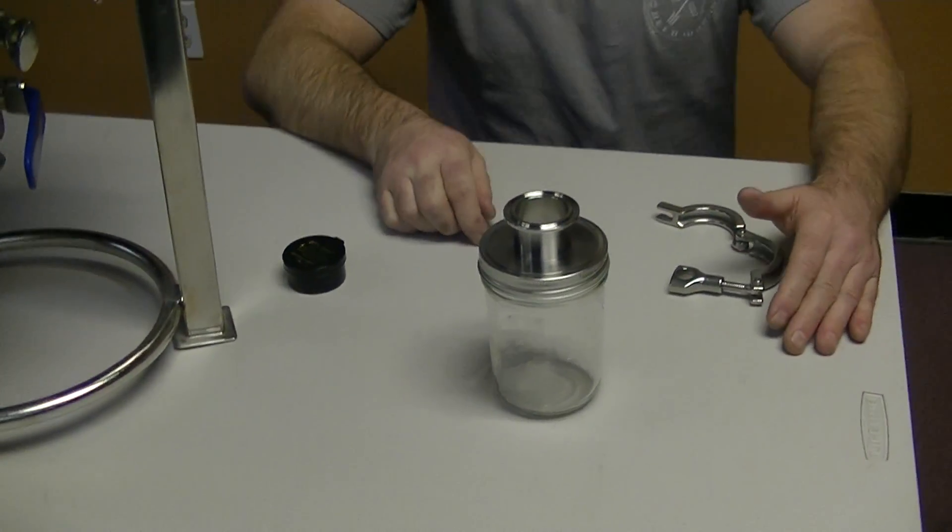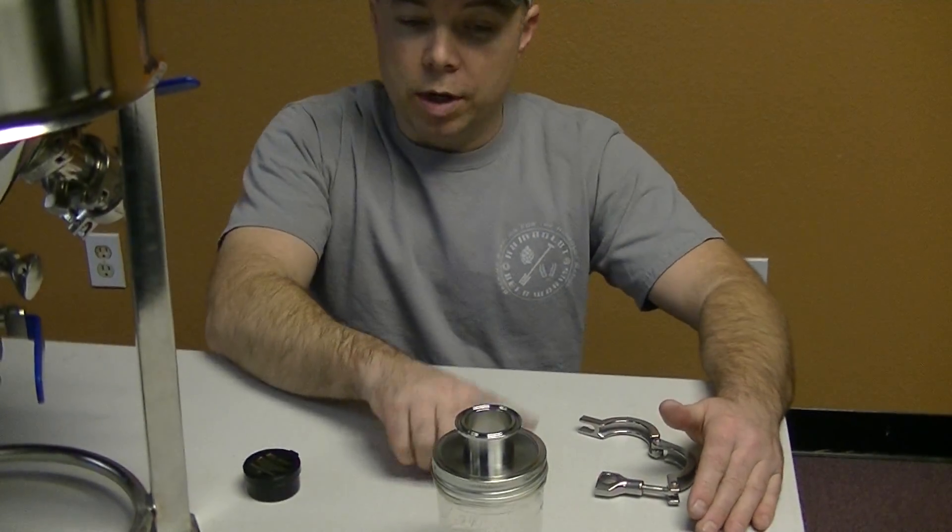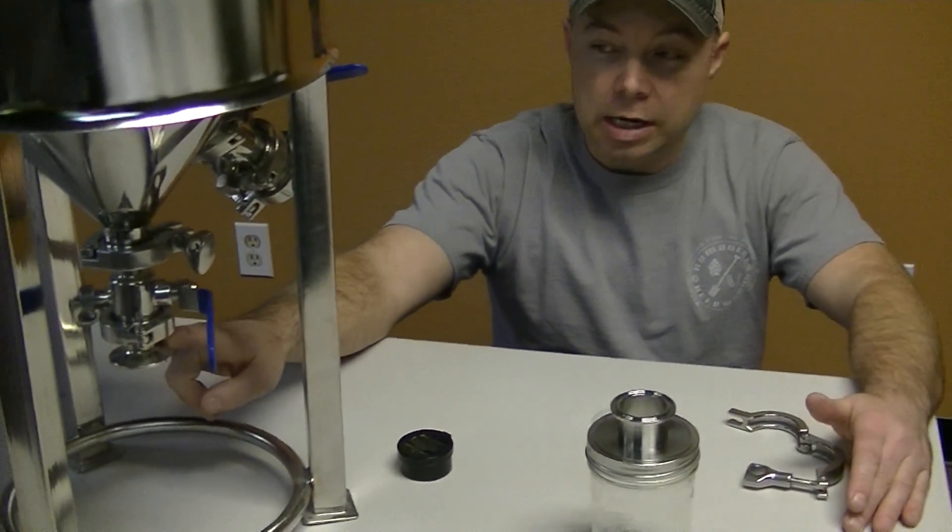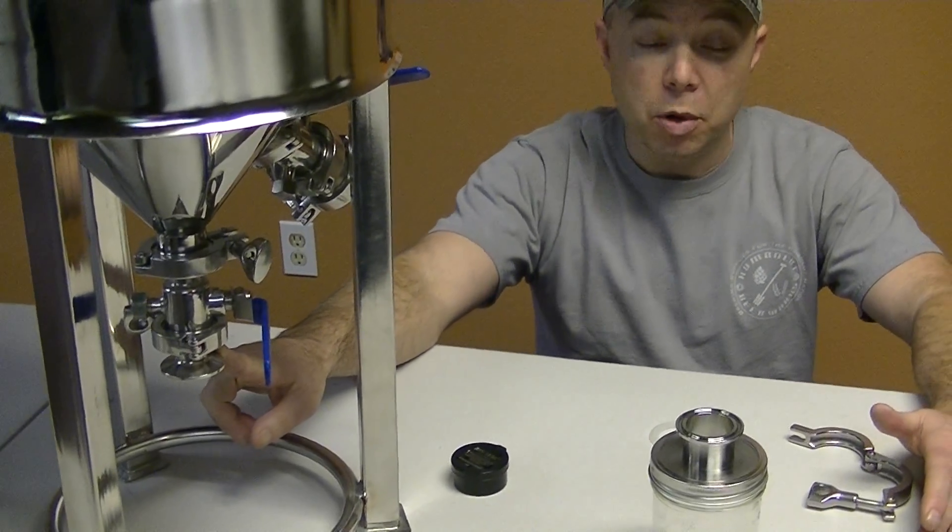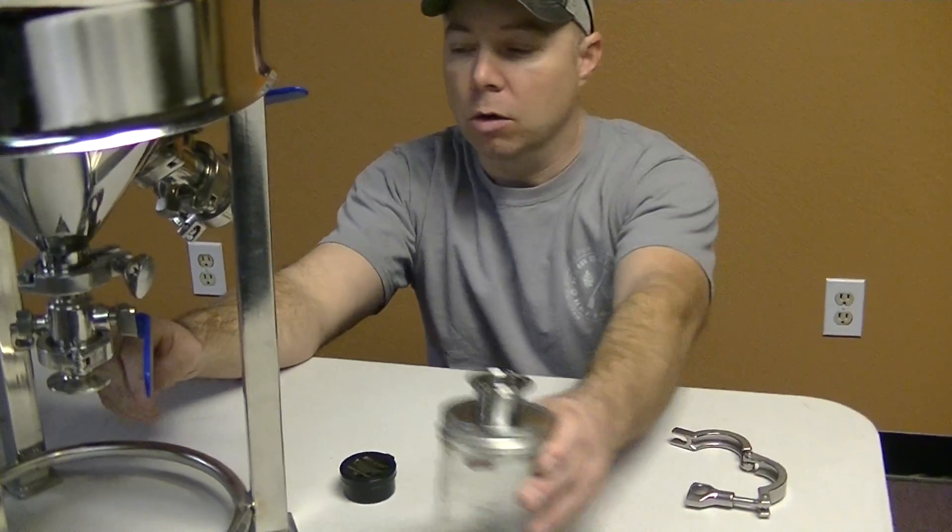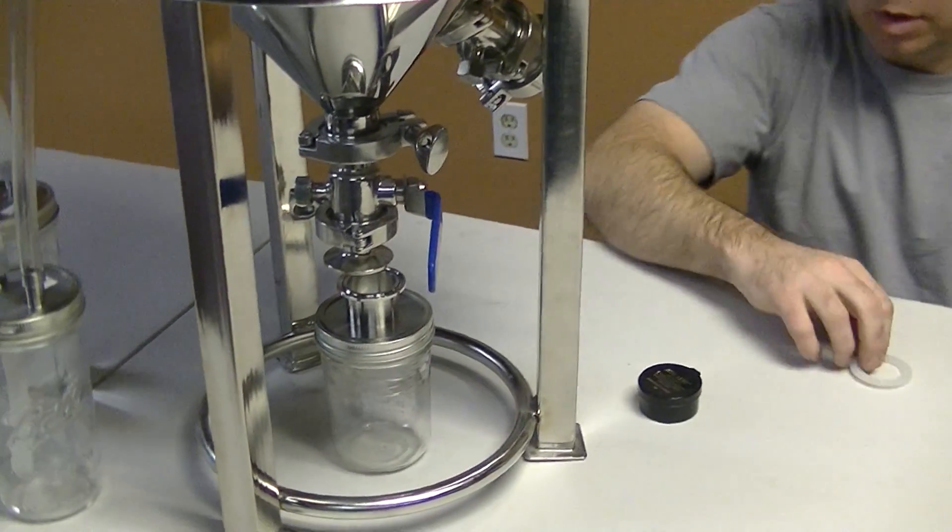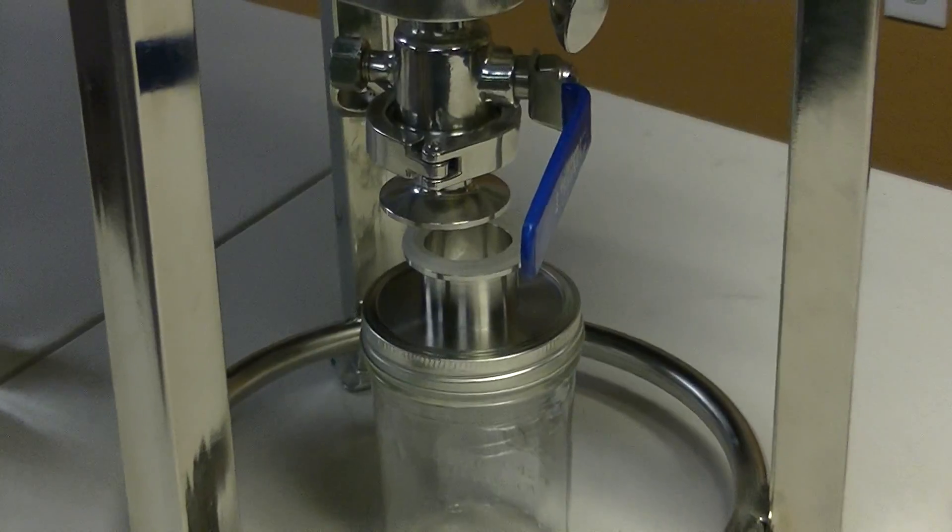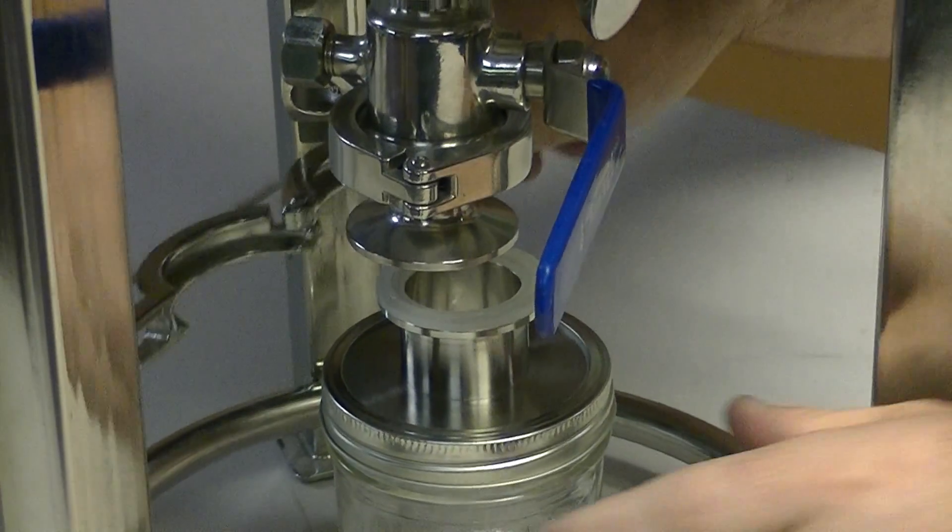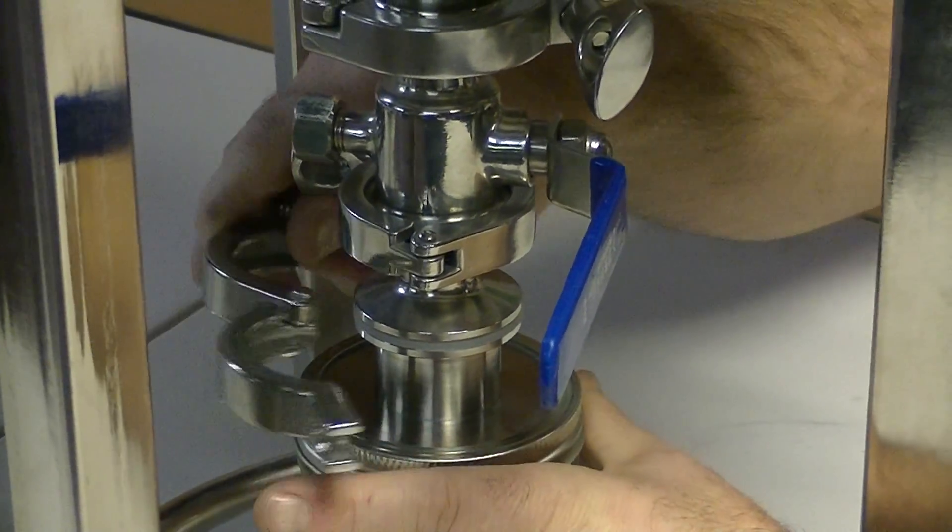Now what happens is, this guy here is going to go on to your inch and a half triclover dump valve on your conical. Throw our silicone gasket on like that. This goes up here like so.